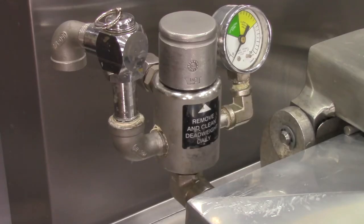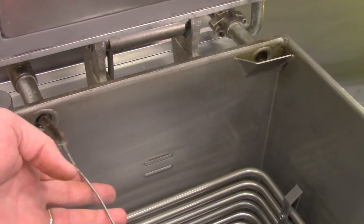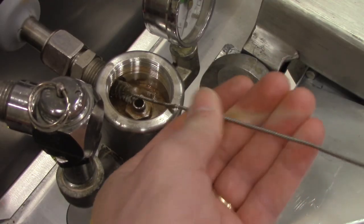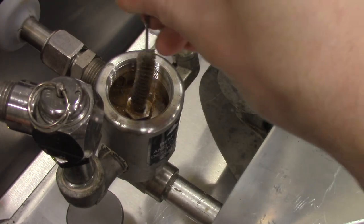To recap, pressure too high issues are always caused by issues with the deadweight valve or the deadweight plumbing. Verify that the deadweight valve is clean and operational, then clean all plumbing from the fry vat all the way back to the steam exhaust stack, including the orifice in the deadweight assembly, and this will take care of the issue.